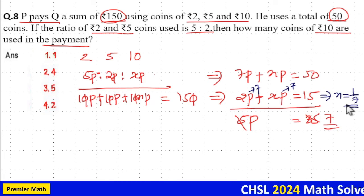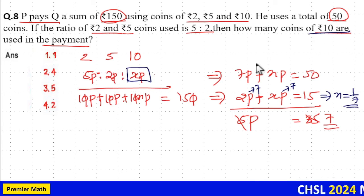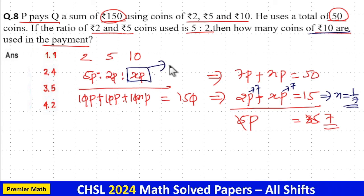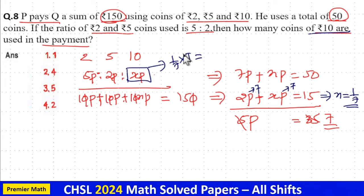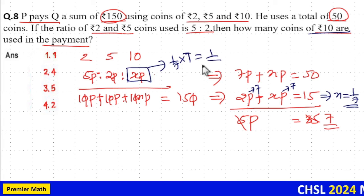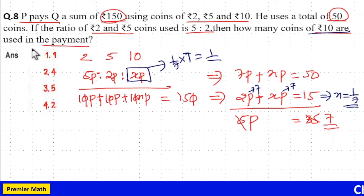If 1 part is 7 and X is equal to 1 by 7, we need total number of 10 rupee coins, which is equal to X part. So, 7 into 1 by 7 is equal to 1. So, number of 10 rupee coins is equal to 1. Option 1 is your answer.